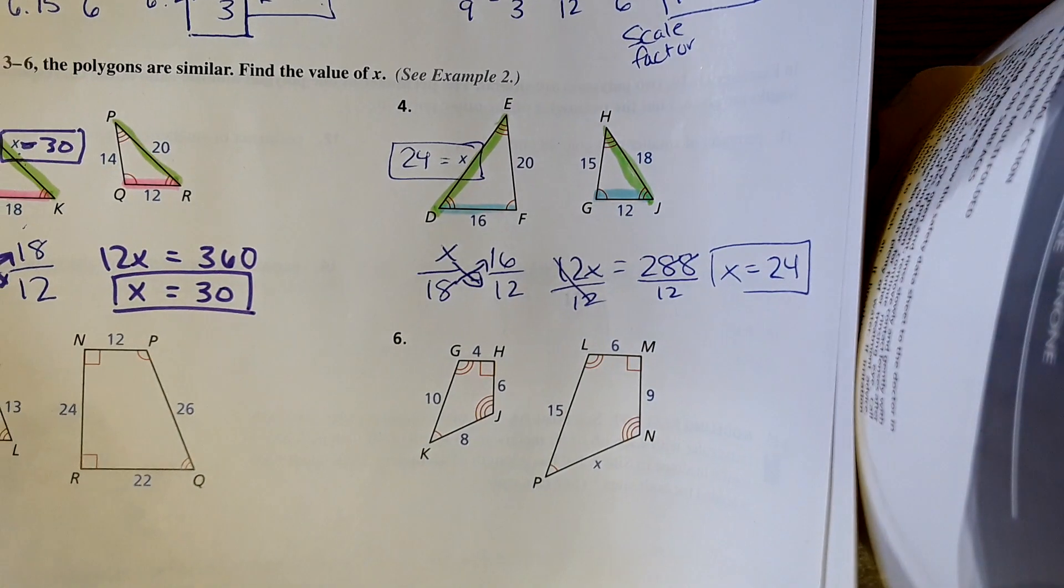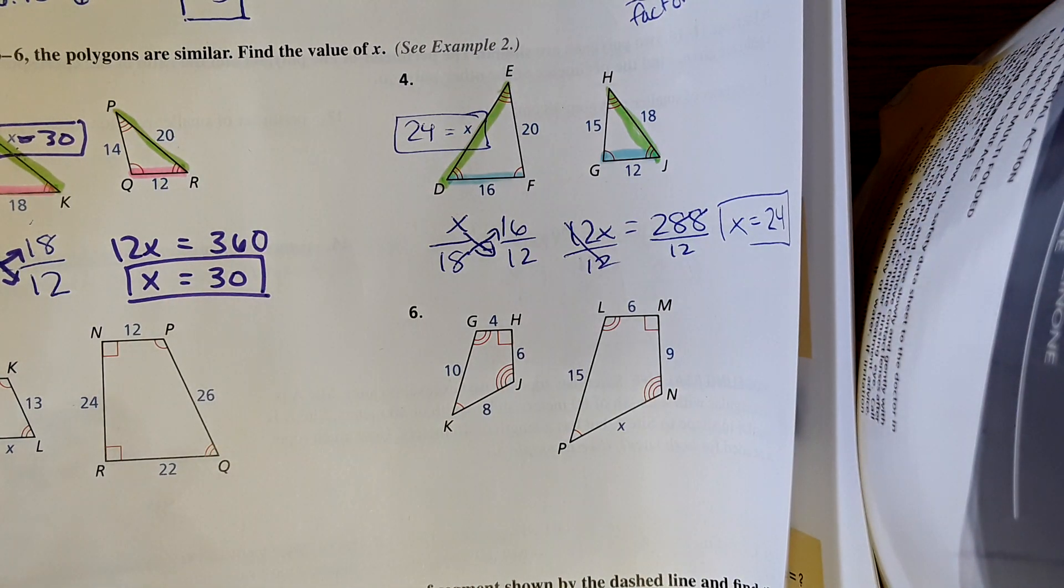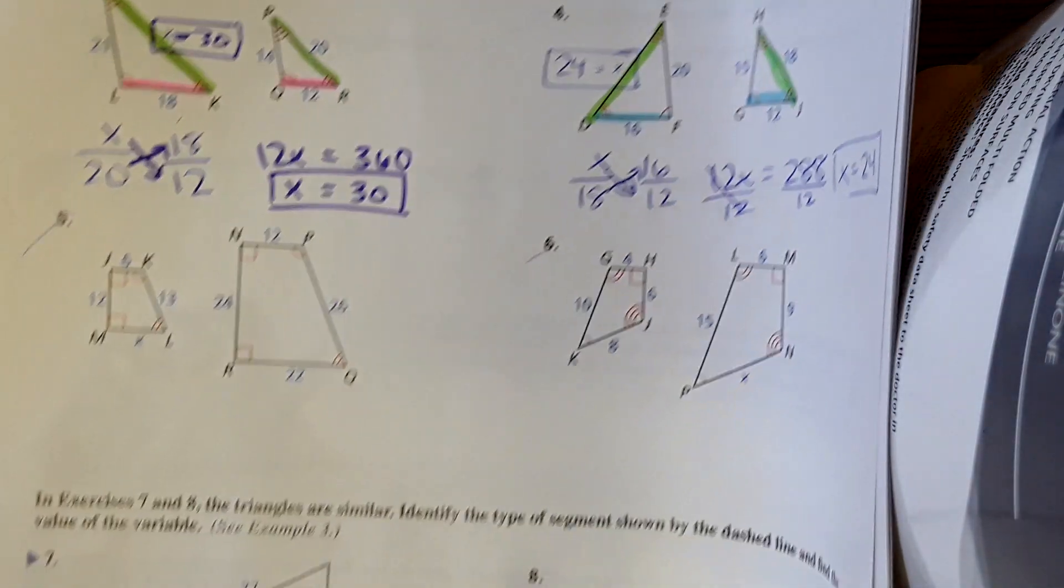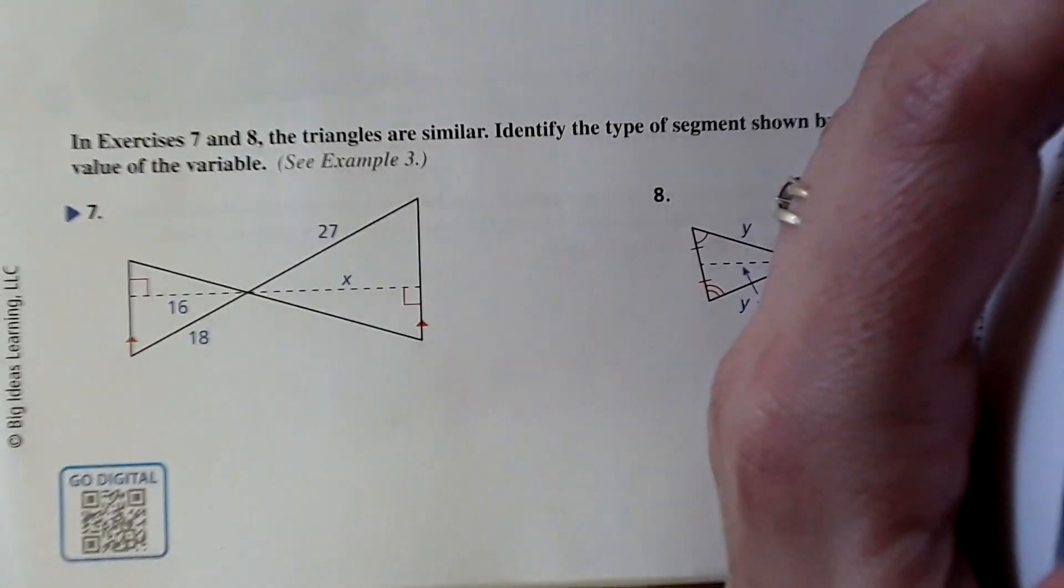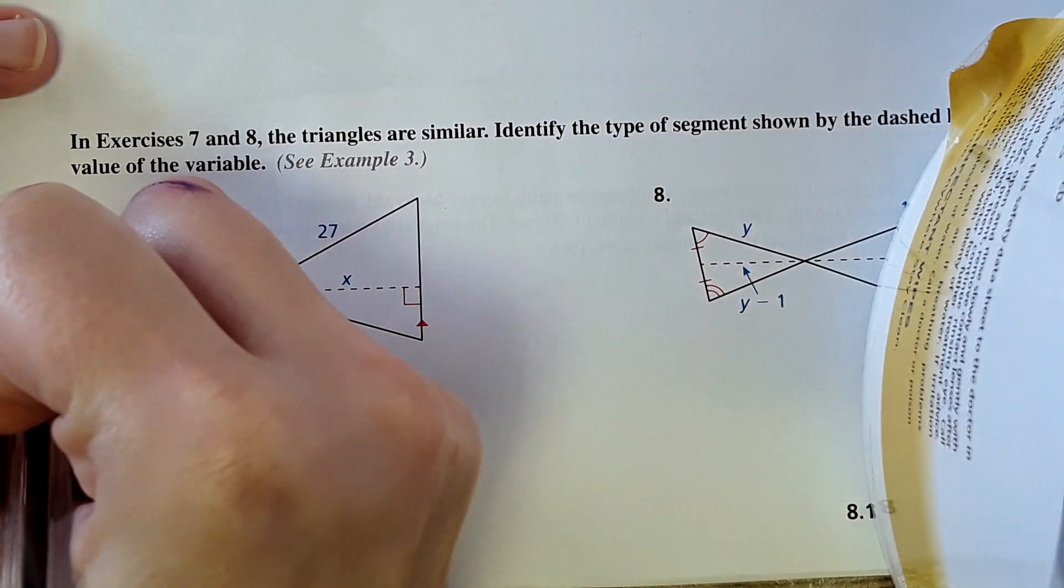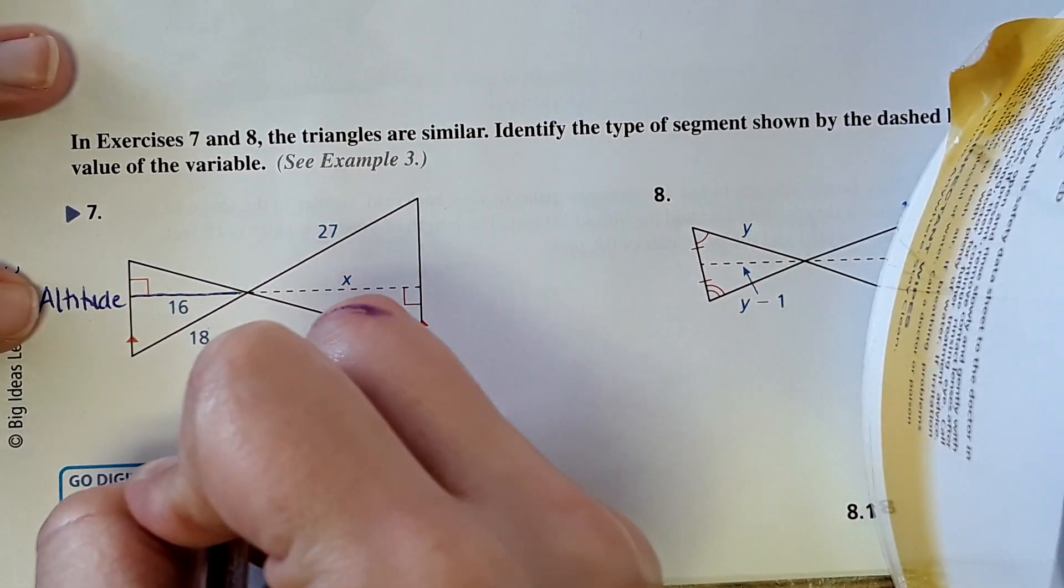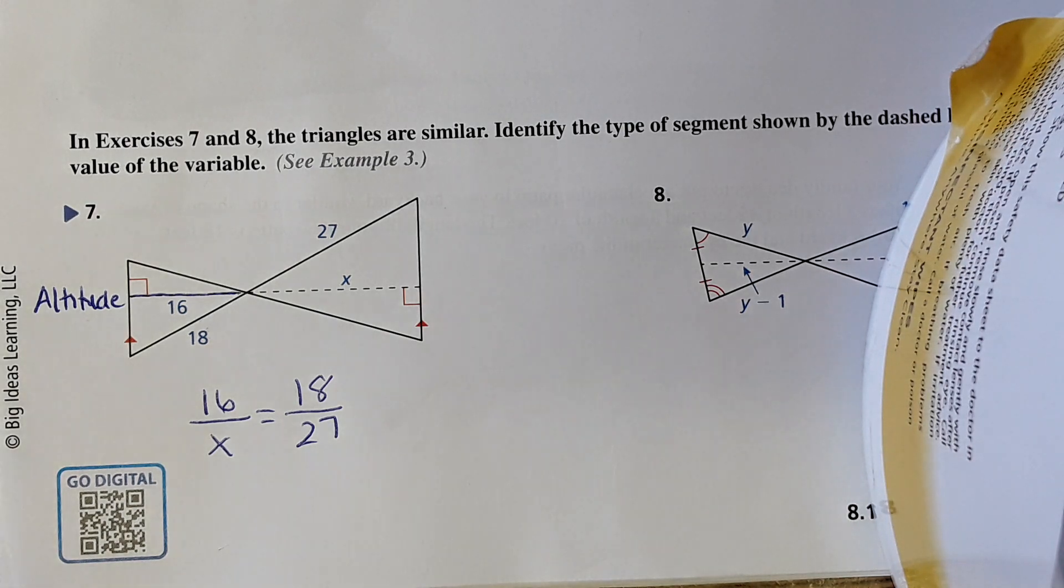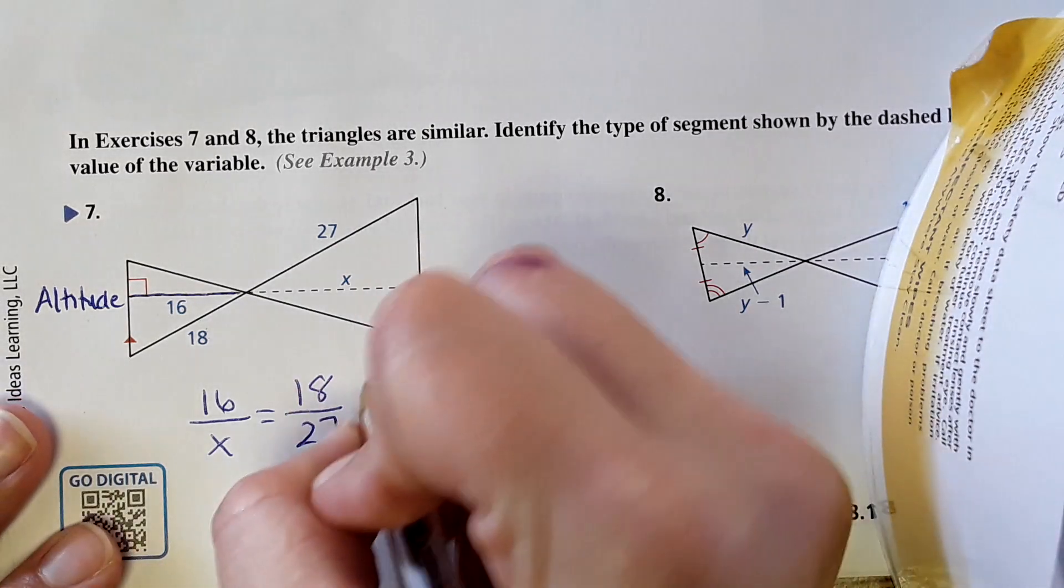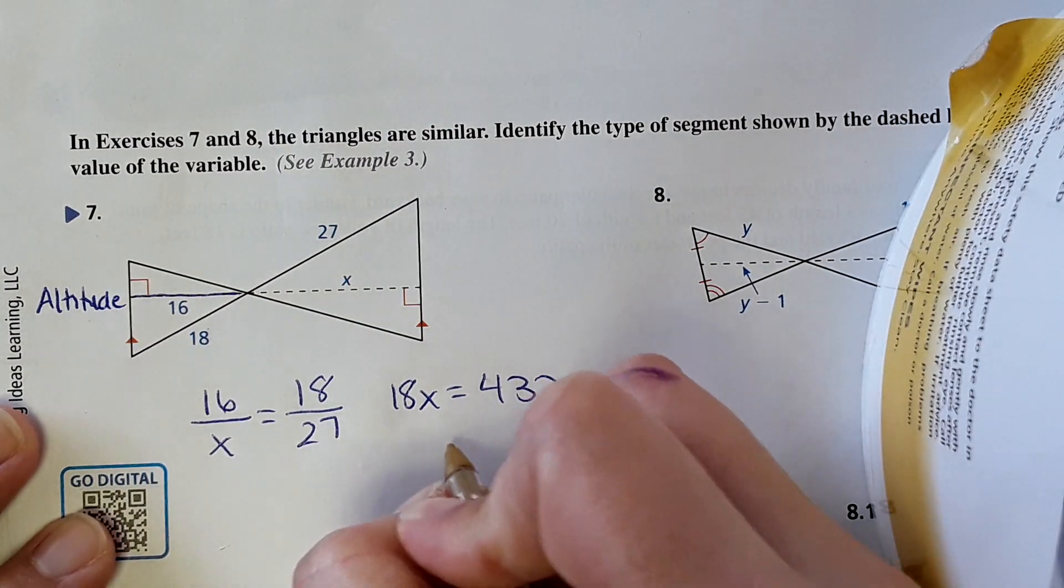Should we move on to the next problem? We're not going to do five or six, same idea. Then for seven and eight, we'll do one of these. It says identify the type of segment shown by the dashed line and value of the variable. Just like with the side lengths, the dimensions of the triangle will be proportional. Here it shows an altitude of each triangle - it's an altitude or the height of the triangle. This would correspond with this height over here. So 16 over x equals 18 over 27. Cross multiply, that's 16 times 27, which is 432. Then x equals 24.